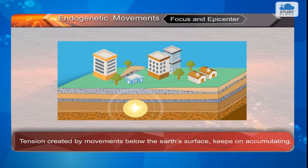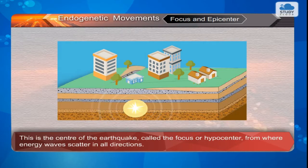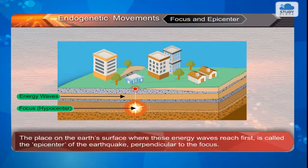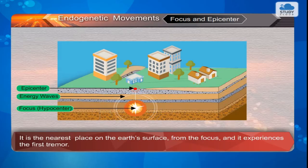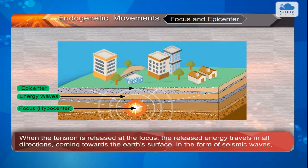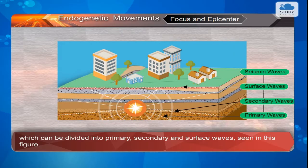Focus and epicenter: Tension created by movements below the earth's surface keeps on accumulating. High energy is released at the place where this tension mounts up. This is the center of the earthquake, called the focus or hypocenter, from where energy waves scatter in all directions. The place on the earth's surface where these energy waves reach first is called the epicenter of the earthquake, perpendicular to the focus. It is the nearest place on the earth's surface from the focus and it experiences the first tremor. When the tension is released at the focus, the released energy travels in all directions towards the earth's surface in the form of seismic waves, which can be divided into primary, secondary, and surface waves.